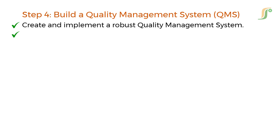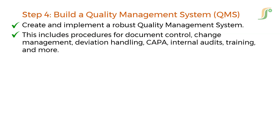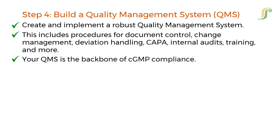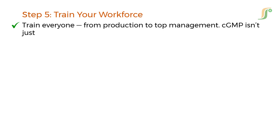Step 4: build a Quality Management System. Create and implement a robust QMS. This includes procedures for document control, change management, deviation handling, CAPA, internal audits, training, and more. Your QMS is the backbone of CGMP compliance.